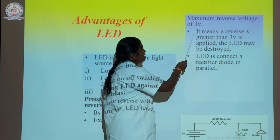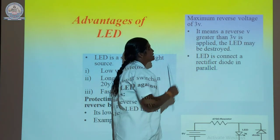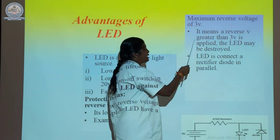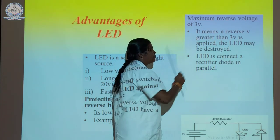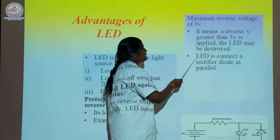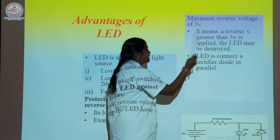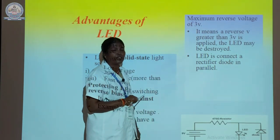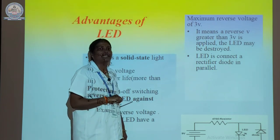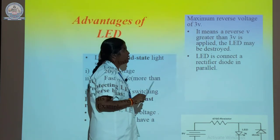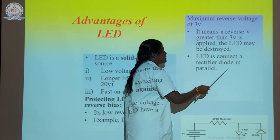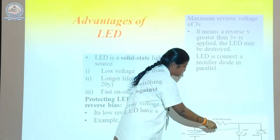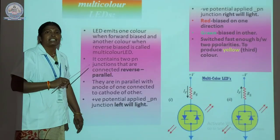If a reverse voltage greater than 3 V is applied to the LED, it may be destroyed. The LED is connected to a rectifier, which converts an AC signal into a DC signal. The rectifier diode is connected in a parallel manner, as shown in the diagram.